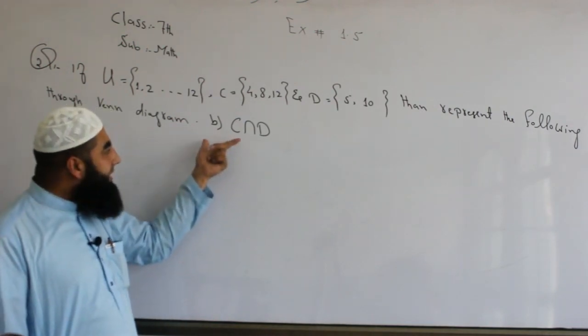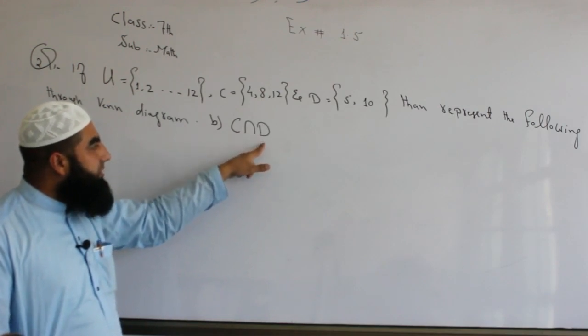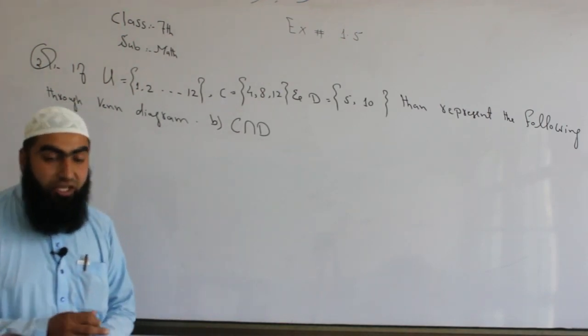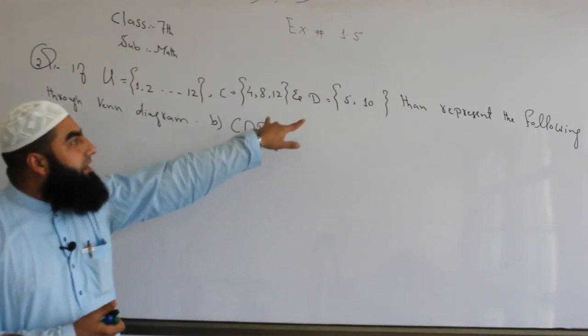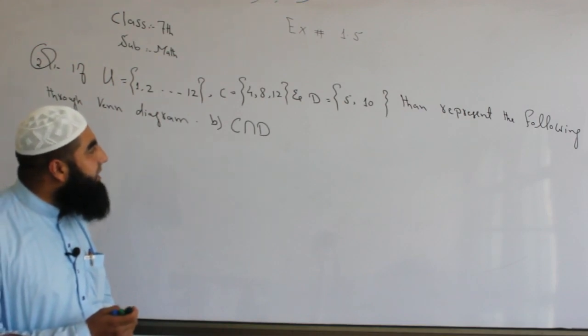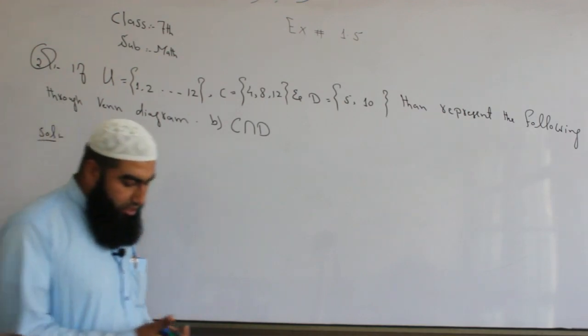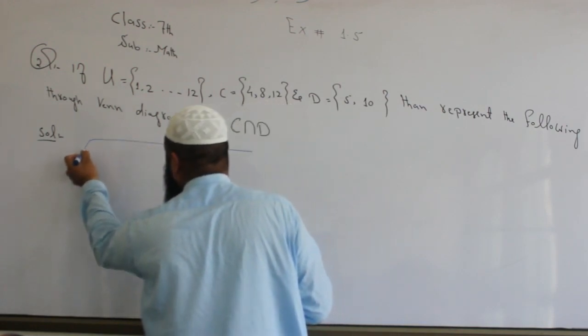C intersection D. You know, these are disjoint sets. When we have disjoint sets, the intersection will be empty. Now let's solve this. First, we'll draw.